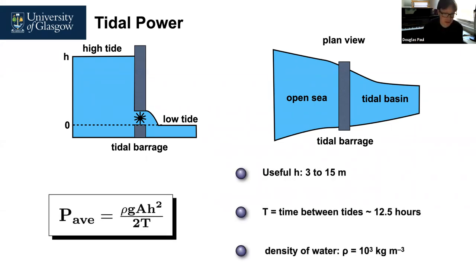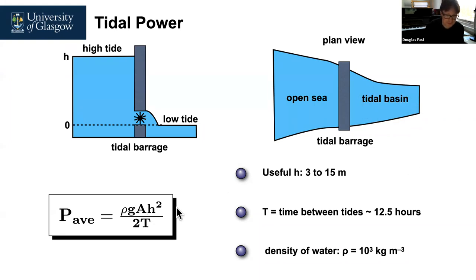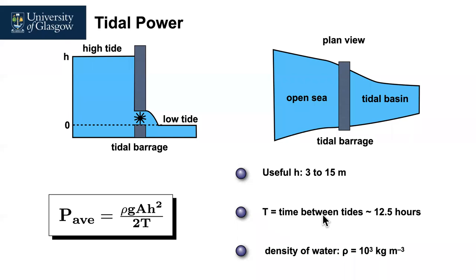The average power available from tidal is: the density of water — 1000 kilograms per cubic metre — times the acceleration due to gravity (9.81 m/s²), times the area of the tidal basin, times the height — which is the difference between high and low tide — squared, divided by twice the period. The period is the time between tides: 12 and a half hours.